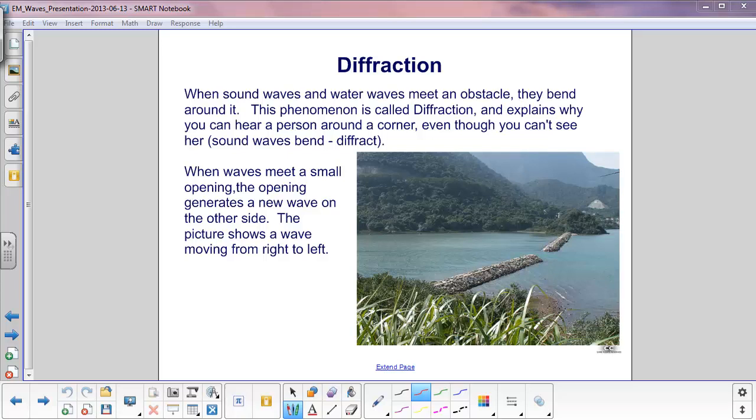When sound waves and water waves meet an obstacle, they bend around it. This phenomenon is called diffraction, and it also explains why you can hear a person talk around the corner even though you can't see her. Sound waves will bend or diffract around the corner.